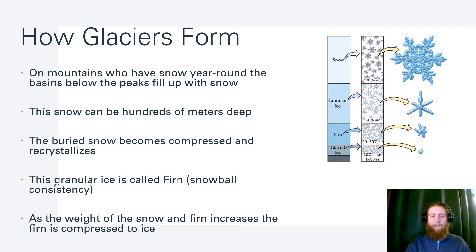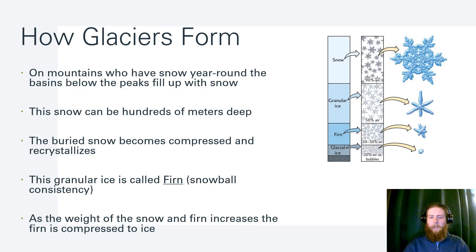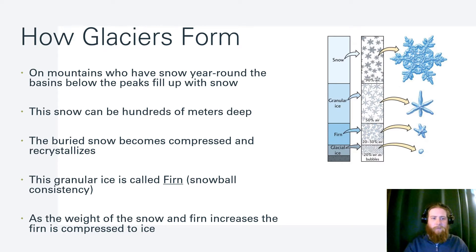Glaciers form by this slow, year-long process where basins and areas on a mountain get filled up with snow. The snow can be hundreds of meters deep. As the snow gets buried, it gets crystallized into smaller and smaller chunks. This diagram shows the track of a single snowflake as it gets compressed down to glacial ice. Before we get to glacial ice, we go through a stage called firn, which is a snowball consistency. As the weight of this compressed snow pushes down, it continues to get compacted to form ice.